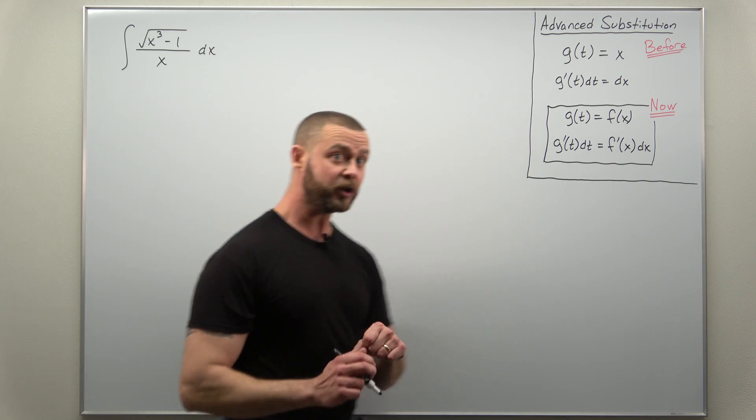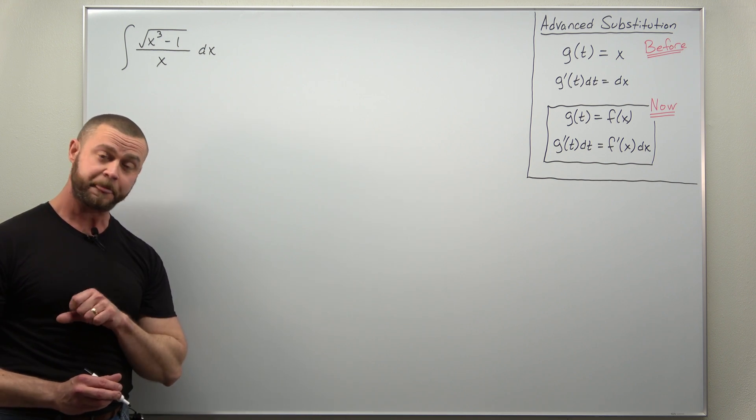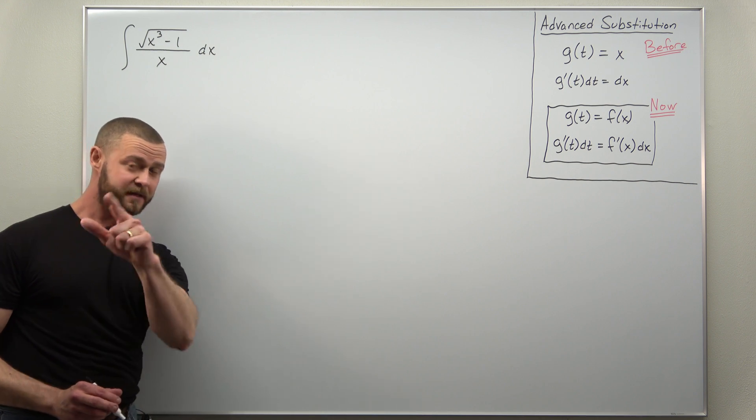So let's go to the integral in question here and undoubtedly what makes this one a little bit tricky is the square root. Now if we had the square root of a perfect square that would cancel.